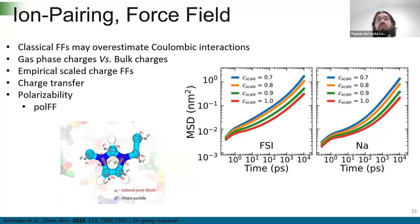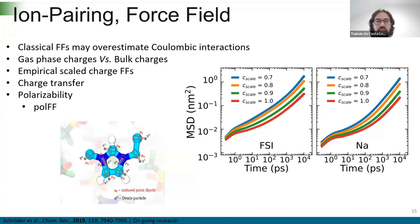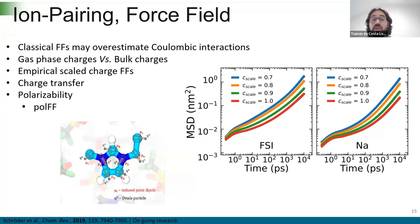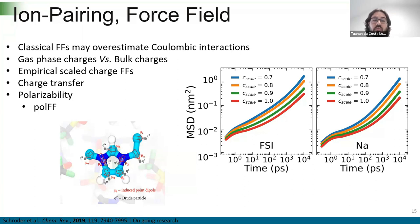Now that we know what ion pairing is, how it affects dynamics, and how to measure it, we have to think about how ion pairing affects our MD simulations and force fields. In classical MD simulations, we use charges obtained from quantum chemical calculations of isolated ions in the gas phase. We know that this leads to an overestimation of charges compared to the bulk phase, and if we use these charges, we are overestimating the Coulomb interactions and consequently the ion pairing.